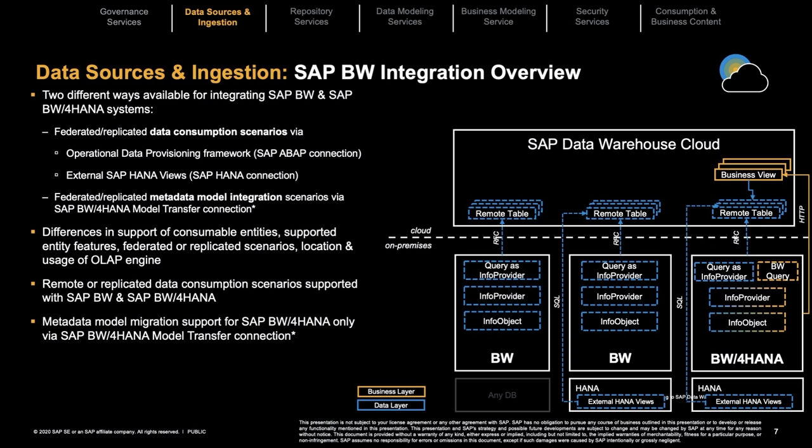The other option is the federated and replicated metadata model integration via the BW/4HANA model transfer. This provides a tighter integration between BW/4HANA and SAP Data Warehouse Cloud, allowing you to connect to BW queries, info providers, and info objects on a semantic level — which is important to understand. There are some differences in support of entities depending on the scenario, location, and usage of the OLAP engine. You can access data remotely or replicate it.